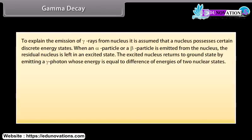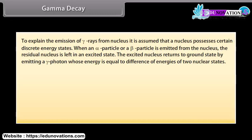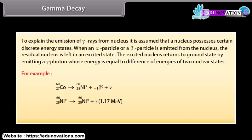Gamma decay: To explain the emission of gamma rays from a nucleus, it is assumed that a nucleus possesses certain discrete energy states. When an alpha particle or a beta particle is emitted from the nucleus, the residual nucleus is left in an excited state. The excited nucleus returns to the ground state by emitting a gamma photon whose energy equals the difference of energies of two nuclear states. For example, Cobalt nucleus with mass number 60 and atomic number 27 transforms into Nickel nucleus with mass number 60 and atomic number 28. The excited Nickel nucleus returns to ground state by emission of two successive gamma photons of energies 1.17 MeV and 1.33 MeV.